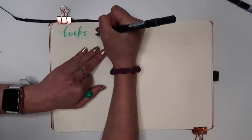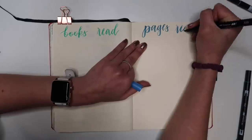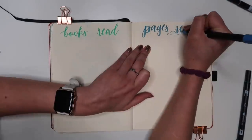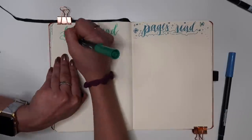And here we're doing just my staple books read and pages read spread. Again this is kind of where I'm trying to practice my actual calligraphy so it's not perfect and honestly these ones are pretty boring.